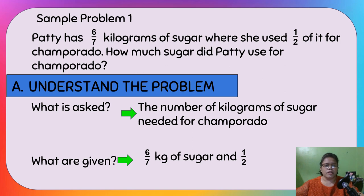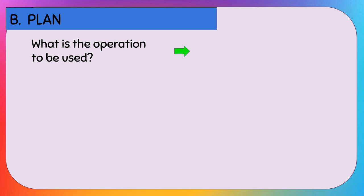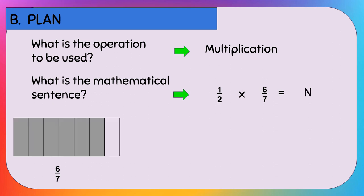Step B: Plan. What is the operation to be used? It should be multiplication, because one half of 6/7 means 6/7 times one half. The mathematical sentence is: one half times 6/7 equals n. The word 'of' can be replaced by a multiplication sign.